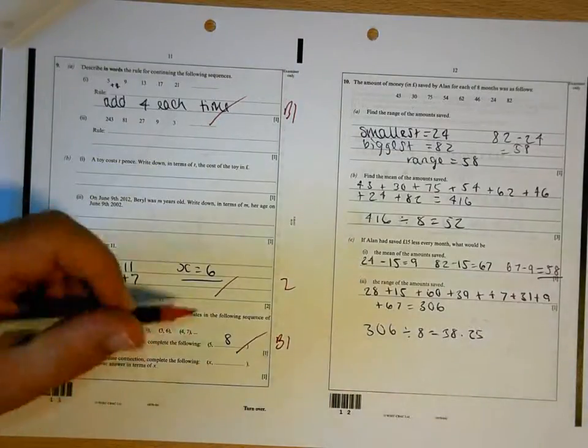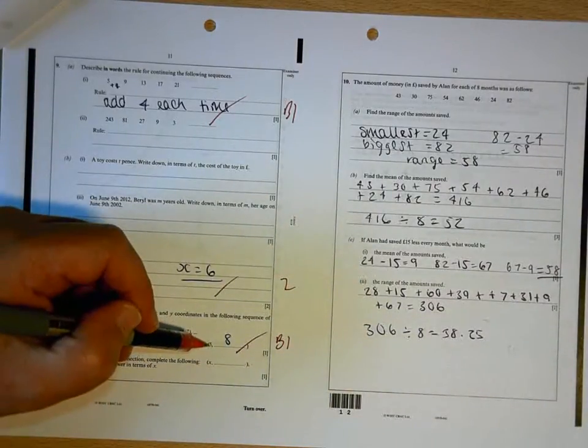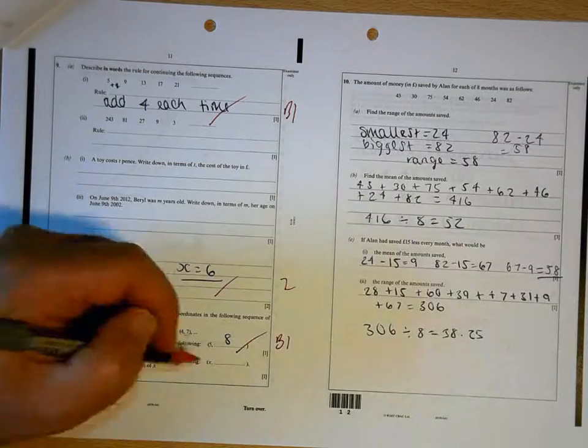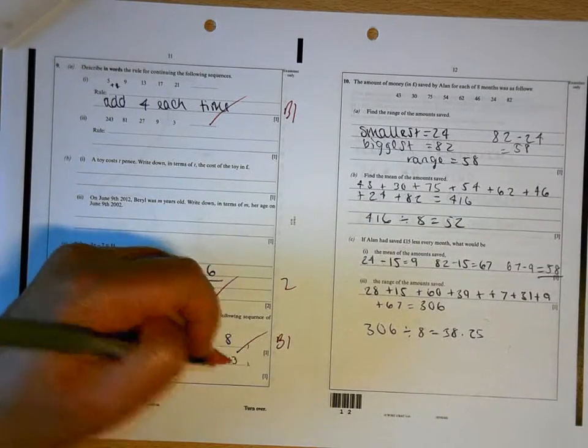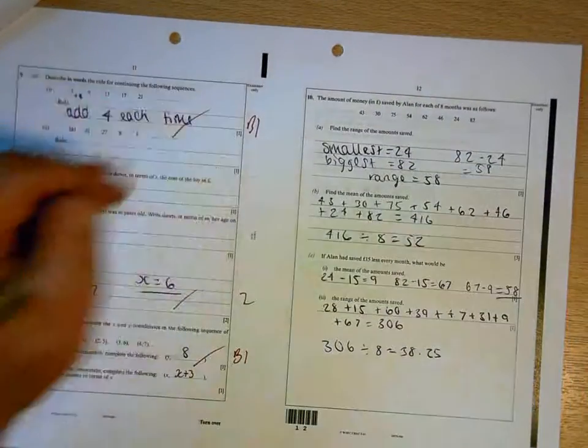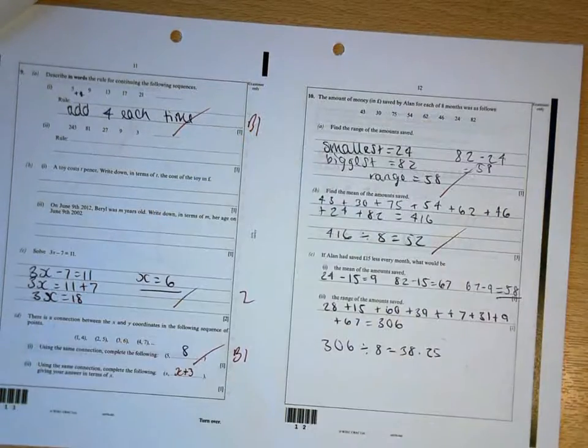That one's 8. This one you're adding 3, so that's 5 add 3. This one would be x add 3. Range is 58, mean is 52.